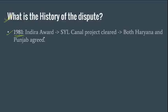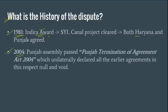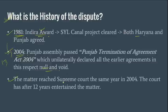The history of the dispute: In 1981, under the Indira Award, Indira Gandhi settled the issue and the Satluj Yamuna Link Canal was proposed — both Haryana and Punjab agreed at that time. In 2004, the Punjab Assembly passed the Punjab Termination of Agreement Act, which unilaterally declared all earlier agreements null and void. The matter then reached the Supreme Court in 2004, but the court kept the issue pending for 12 years. In 2016, this suddenly came to the forefront again.